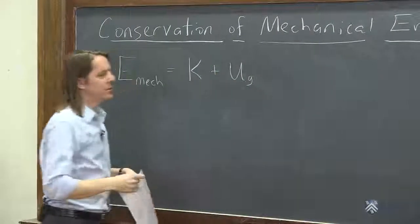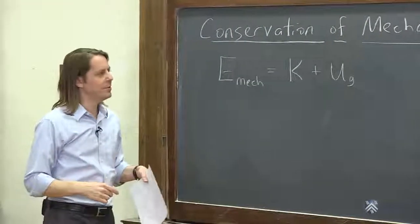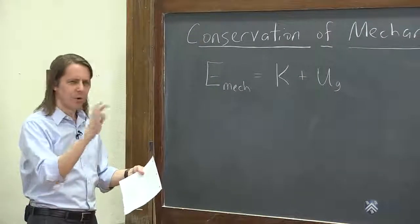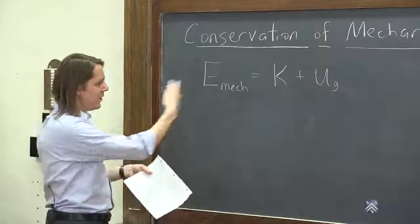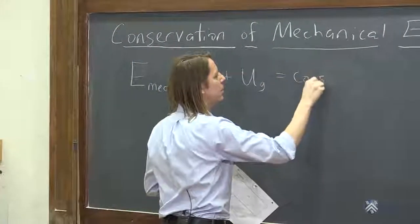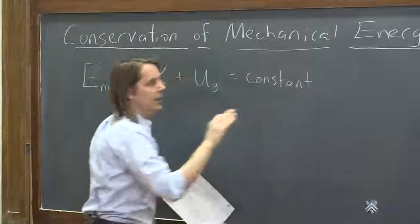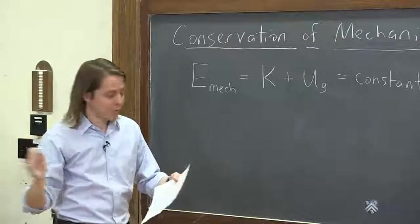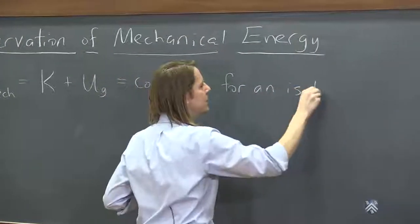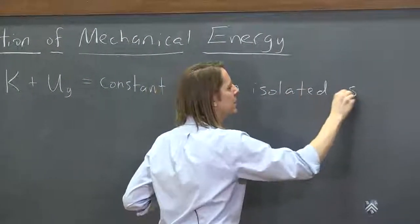And for now, I'll put a G on there, meaning just the gravitational potential energy. So the idea is, if you take an object or a system, and you calculate kinetic plus potential, that that will be constant. But we don't want to do the whole universe. We just want to do part of the universe. So we say, for an isolated system.